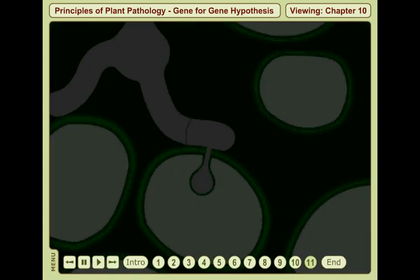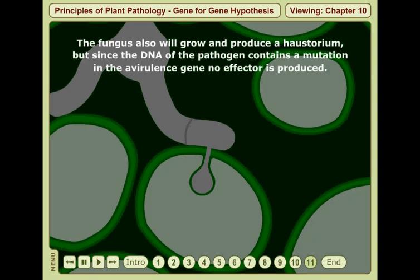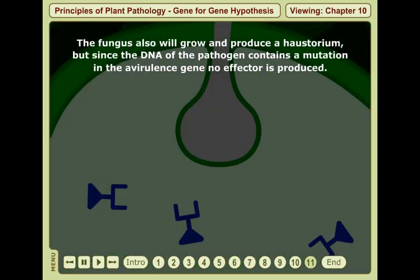The fungus also will grow and produce a haustorium, but since the DNA of the pathogen contains a mutation in the avirulence gene, no effector is produced.